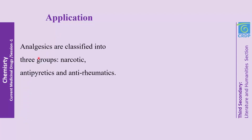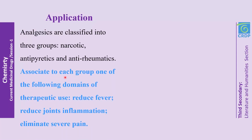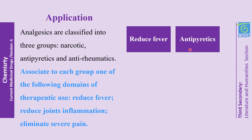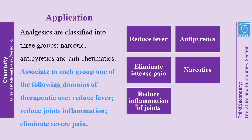Another application: Analgesics are classified into three groups — narcotics, antipyretics, and anti-rheumatics. Associate to each group one of the following therapeutic uses: reduce fever, reduce joint inflammation, and eliminate severe pain. The group responsible for reducing fever is antipyretics. The group responsible for eliminating intense pain is narcotics. The group responsible for reducing inflammation of joints is anti-rheumatics.